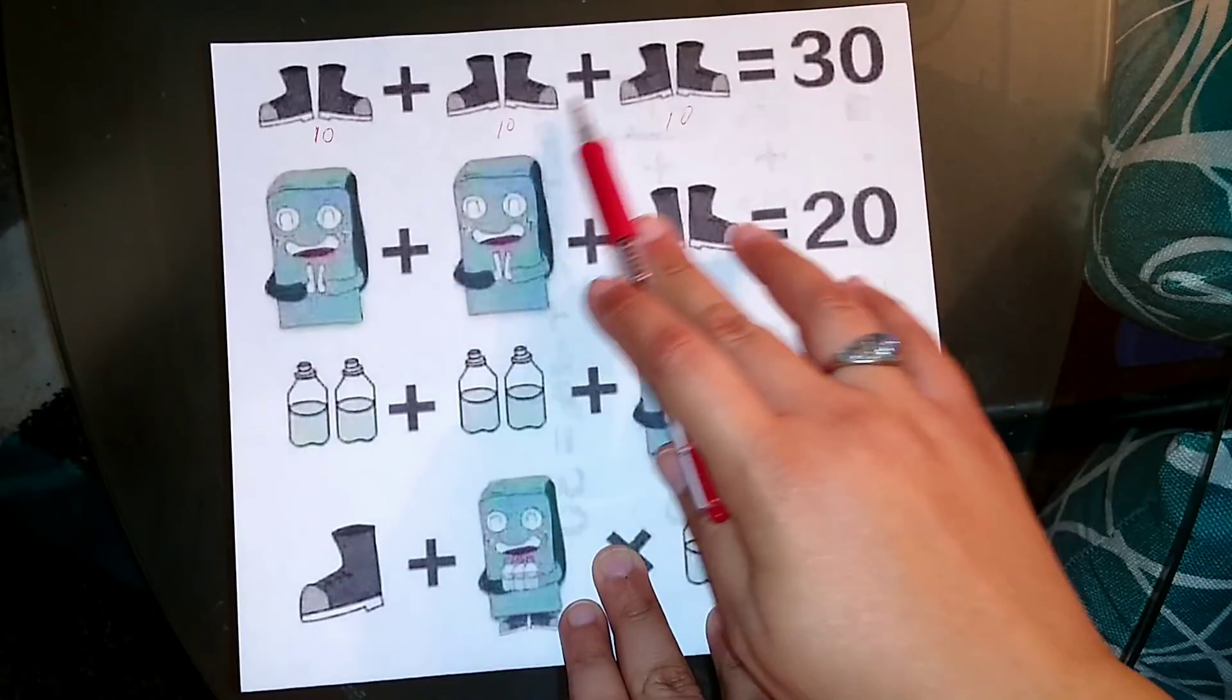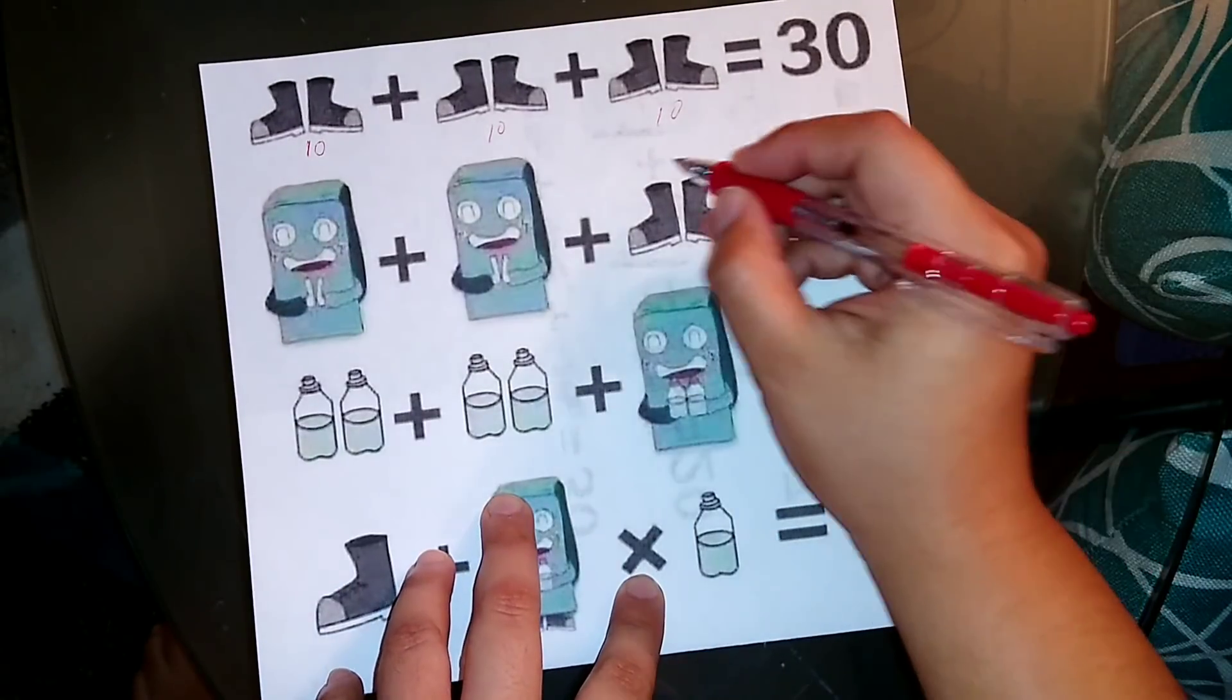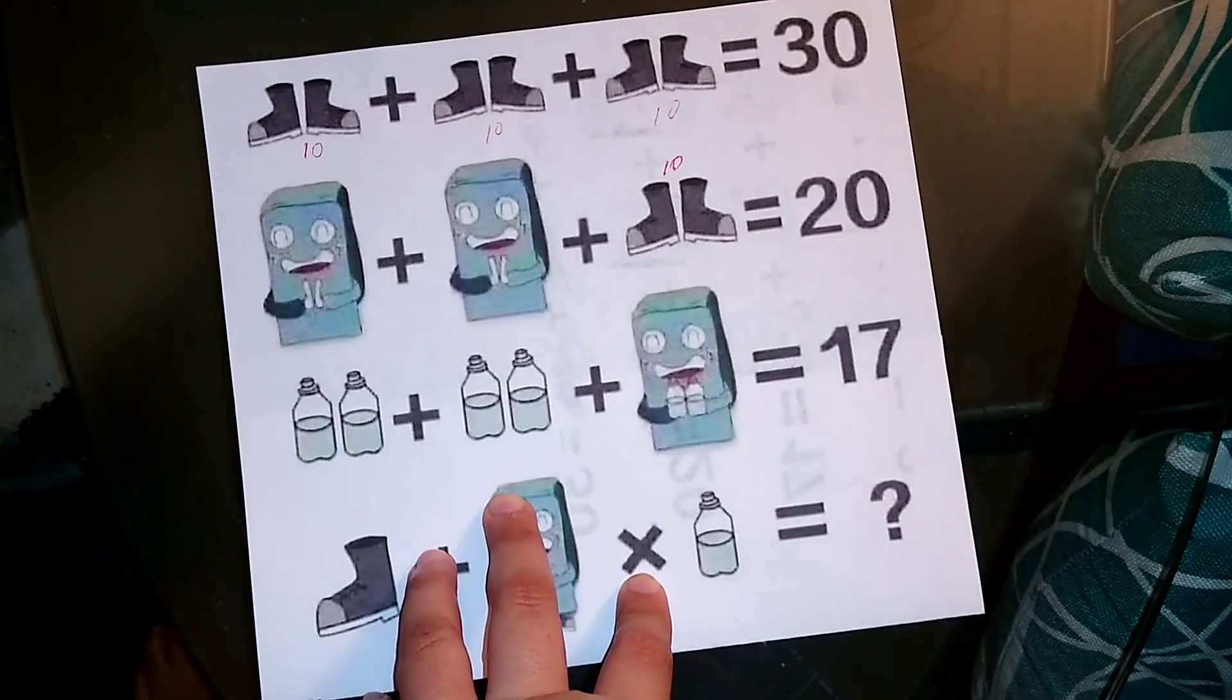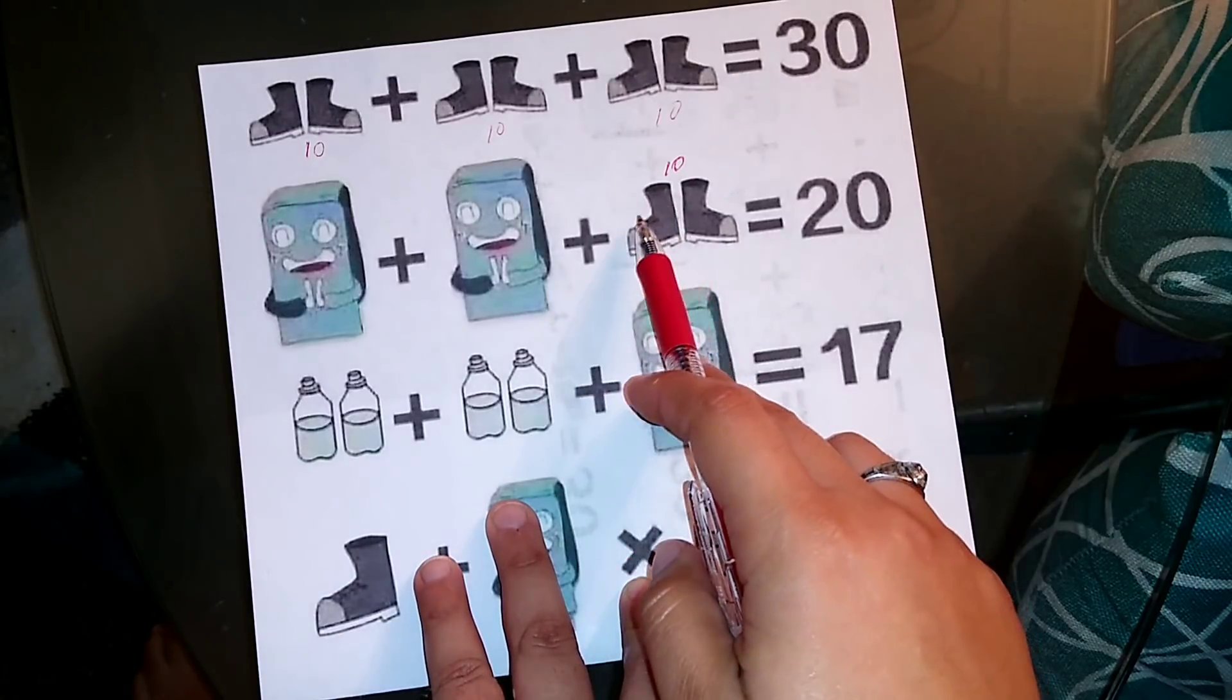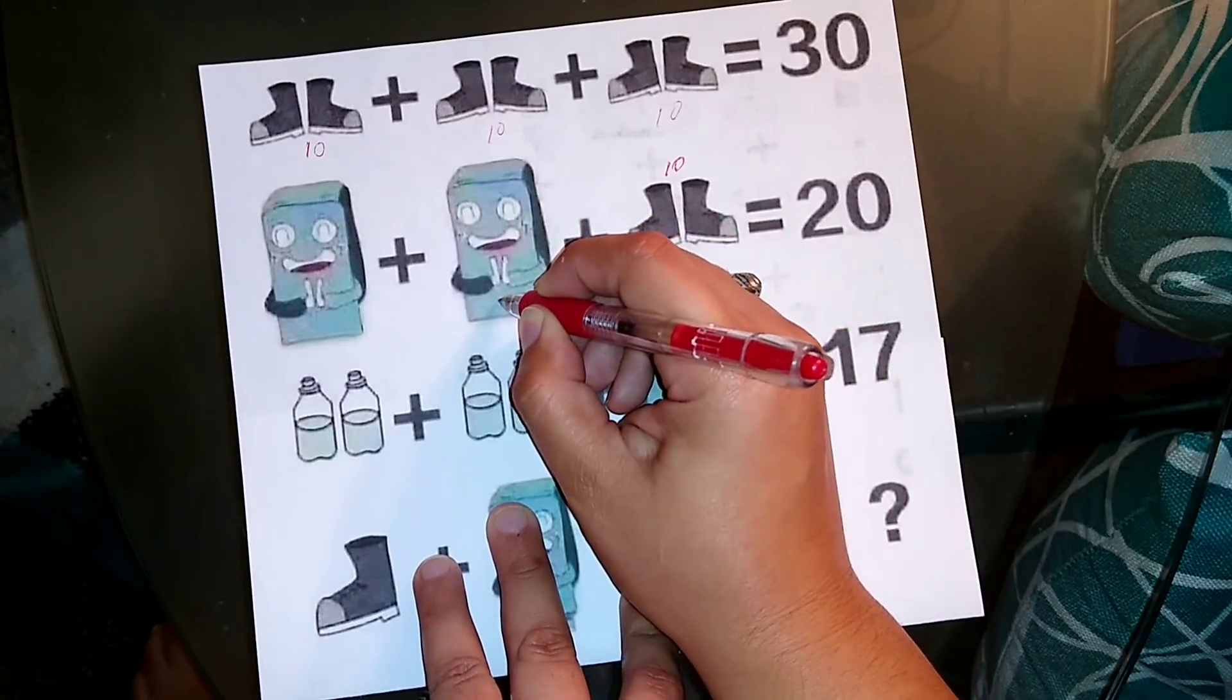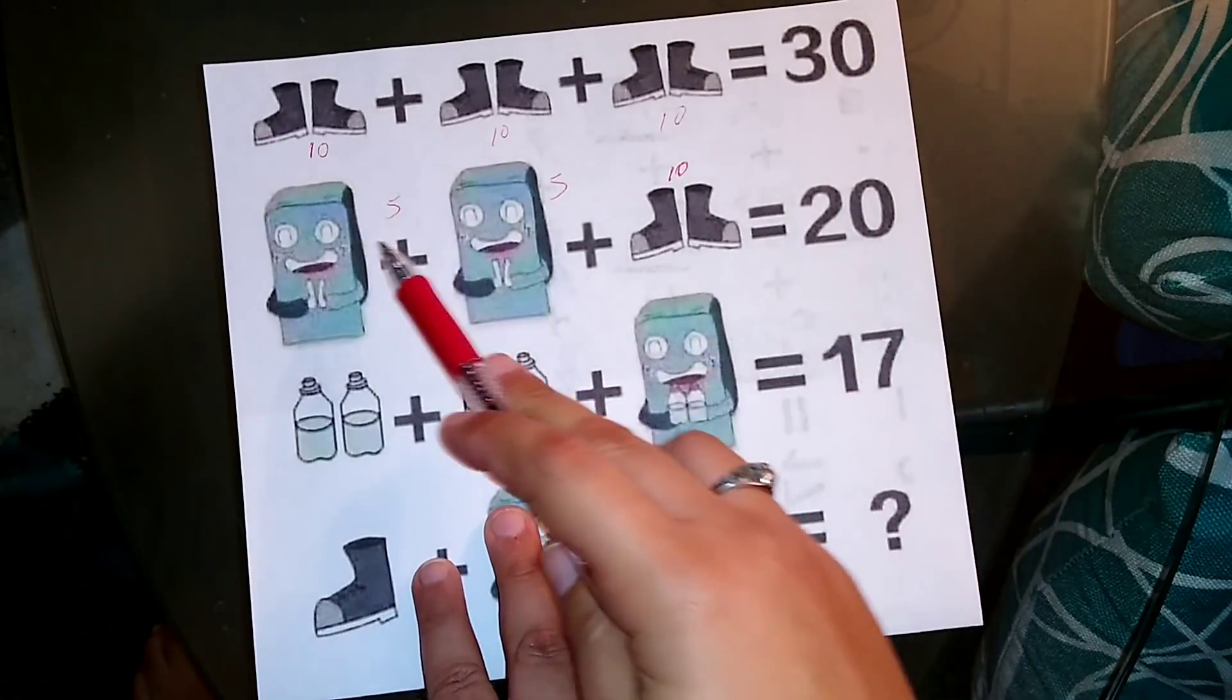So 10 plus 10 plus 10 is 30. Now, next row, we already know that the shoes are 10, so what could these refrigerators be? Well, if this is 10, then this is 5 and so is this 5. 5 plus 5 is 10, 10 plus 10 is 20.